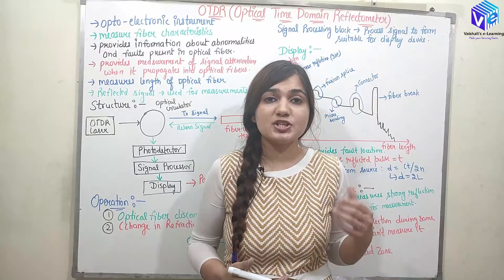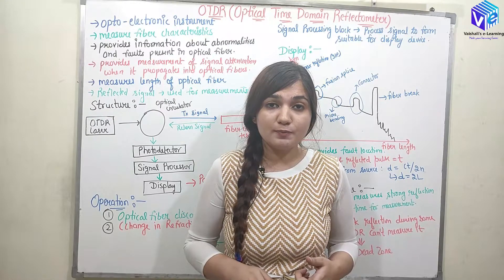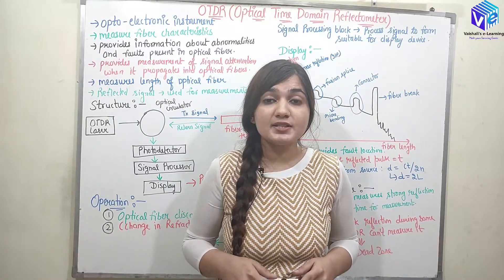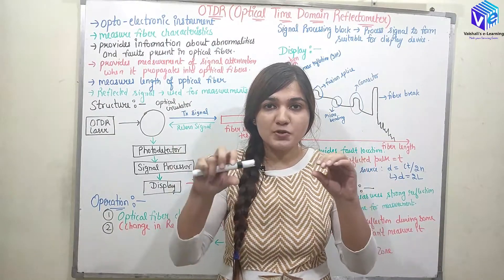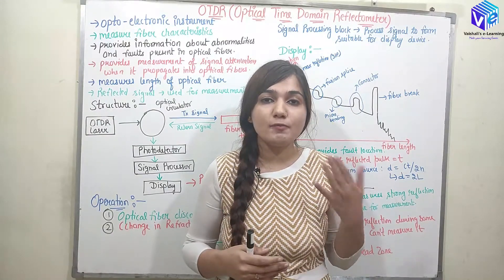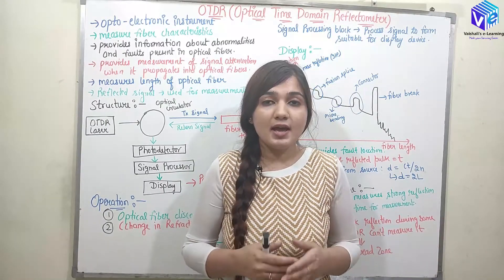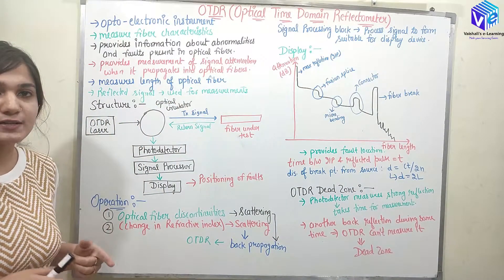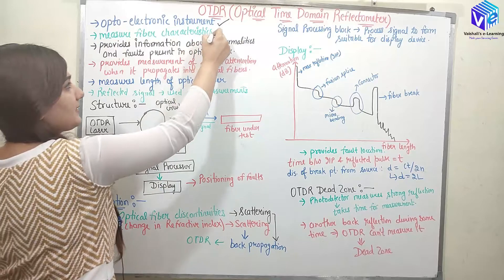The characteristics I can measure using the OTDR include the attenuation of the optical fiber, the length of the optical fiber, and various types of losses — for example, if I have a connector placed between two optical fibers, it will tell me how much loss is there due to connectors, attenuation, and faults inside the fiber, along with the exact location of those faults.